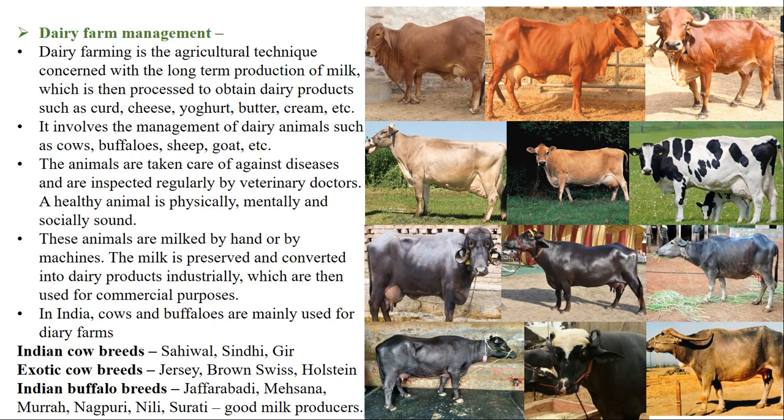Hello students, we are on Chapter 11 - Enhancement of Food Production. In the previous session we started with animal husbandry, and in this session we will cover all the animal husbandry practiced in India. The first topic is dairy farm management. The dairy industry involves production, processing, and distribution of milk and milk products. Milk yield mainly depends on the quality of the breed - selection of high-yielding, disease-resistant breeds suited to the local climate are basic requirements.